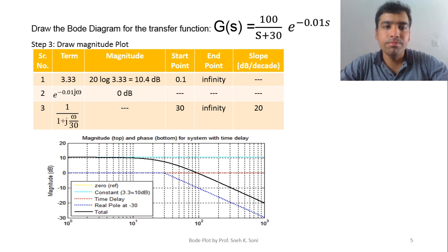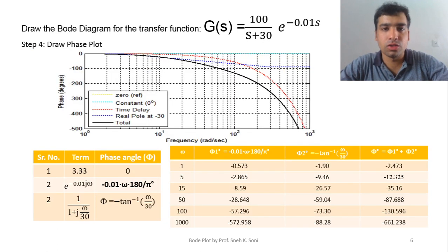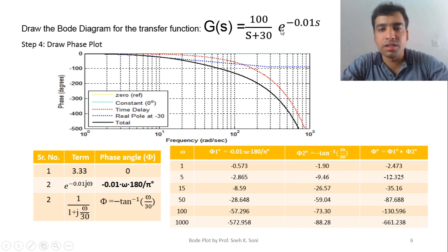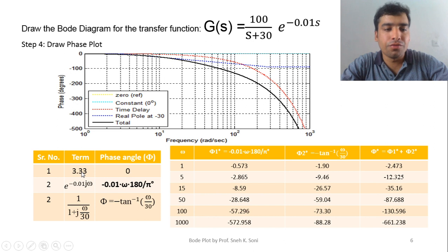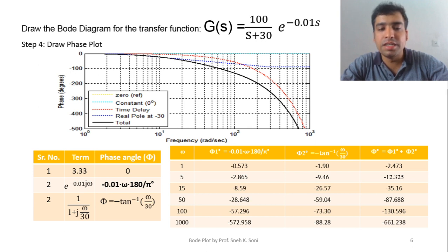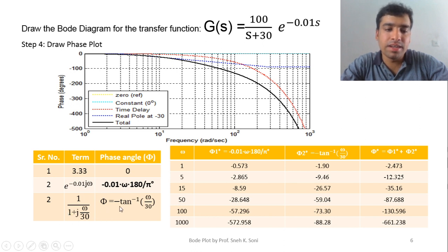Now we plot the phase plot. Because of the delay term, there will be an effect in the phase plot. The constant 3.33 contributes 0 degrees phase. For e^(-0.01jω), the equation is angle = -td * ω * (180/π), with td = 0.01. The first-order pole contributes angle = -tan⁻¹(ω/30). So the resultant phase equation is the addition of these two angles from the two separate terms.